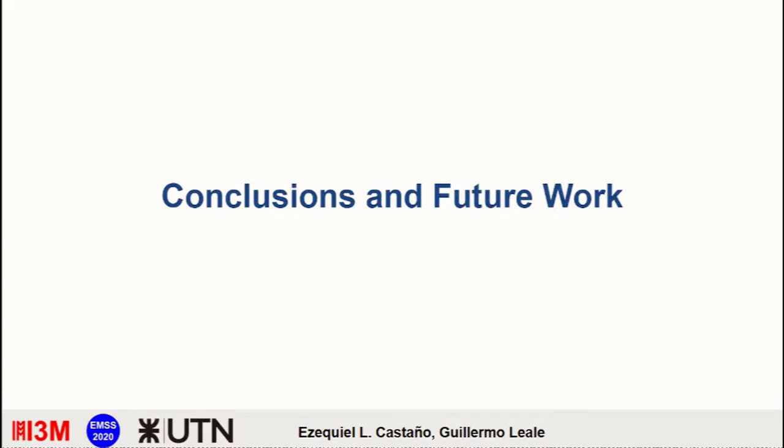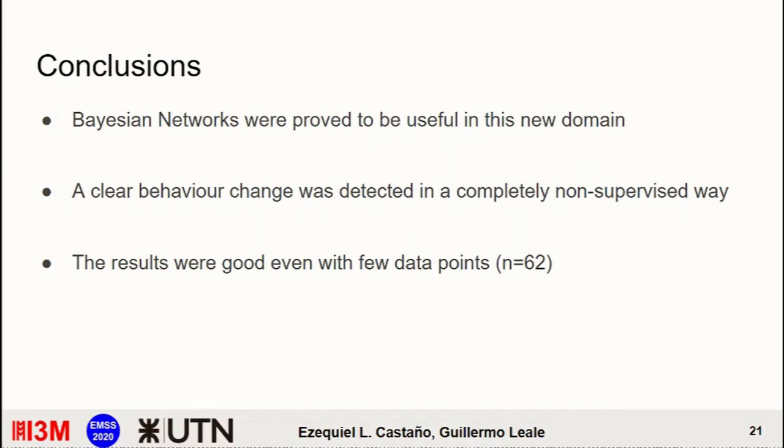So that was basically the results so far. And I would like to share some of the conclusions and future work. The conclusion is that Bayesian networks were proved to be useful in this new domain. And it's what's also useful to see that they detected, right, at least with a high precision and in a non-supervised way, a change in the audience, which supposedly leads to the shutdown of the whole YouTube channel. And another important remark is that these results were good or good enough, even with very few data points. In this case, only with 62, which is particularly important today, where all models currently in trending are using big data. And we need a thousand or hundreds of data points or even millions of data points. Here we can reach a pretty insightful conclusions, even with less than 100 points.